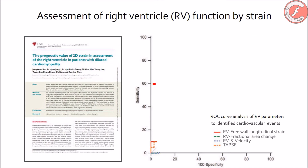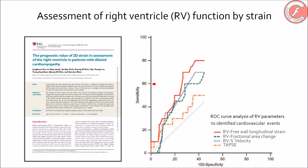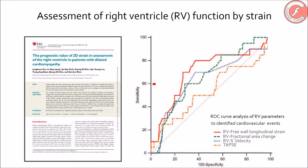Finally, measurement of the longitudinal strain of the myocardial fibers that shape the free wall of the right ventricle can be helpful in two different clinical scenarios. The first one is the identification of those patients with arrhythmogenic cardiomyopathy that can have an elevated risk of sudden death, and the second one is the identification of those patients that, being candidates to ventricular assistance, may need biventricular support.